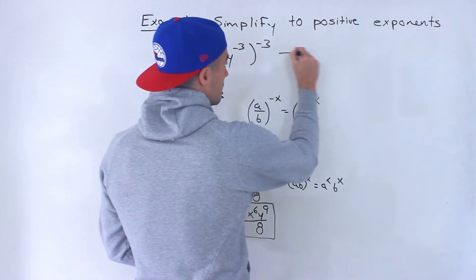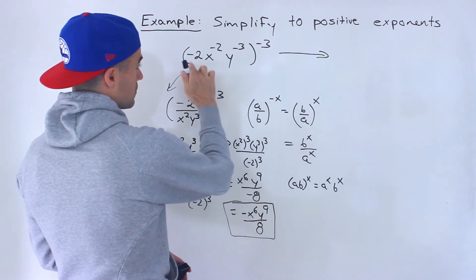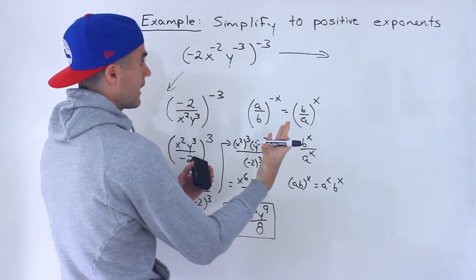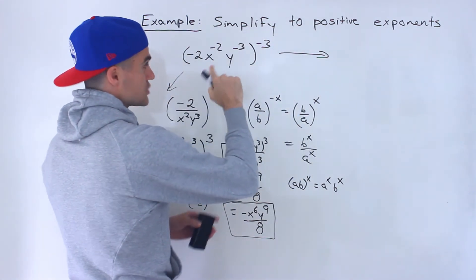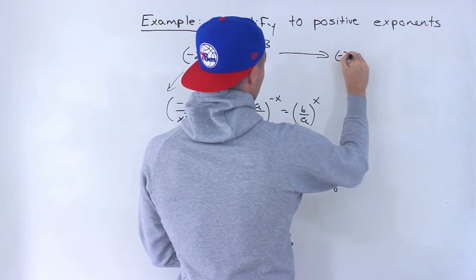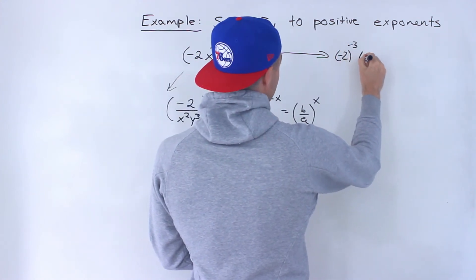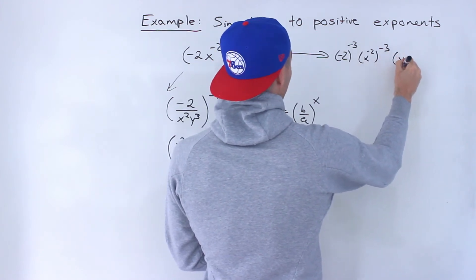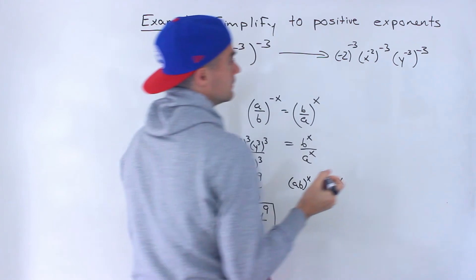Another way is to use this rule — notice we're multiplying everything right from the start. So you can take this negative 3 and distribute it to all the terms. You'd have negative 2 to the power of negative 3, then x to the negative 2 to the power of negative 3, and y to the negative 3 to the power of negative 3.